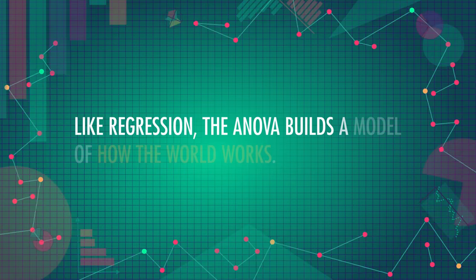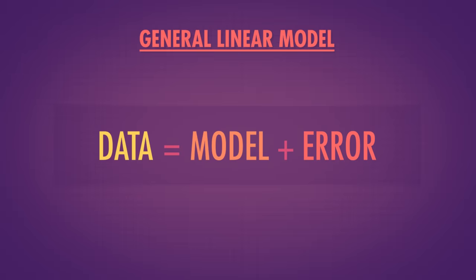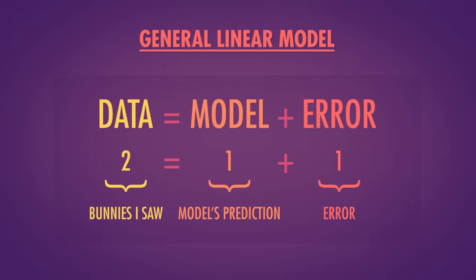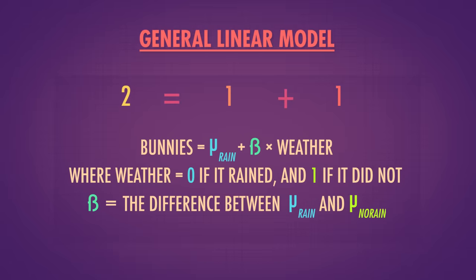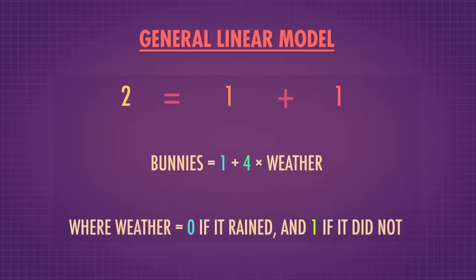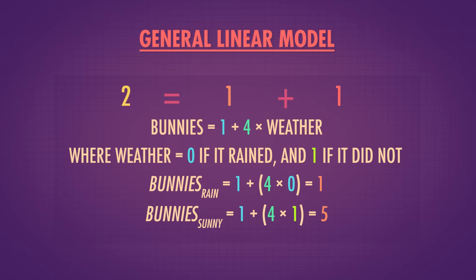Note that this alone isn't evidence that getting a degree causes a higher salary — just that knowing someone's degree might help estimate how much they get paid. Like regression, the ANOVA builds a model of how the world works. For example, my model of how many bunnies I'll see on my walk into work might be that if it's raining I'll see one bunny, and if it's sunny I'll see five — I walk through a bunny preserve. One and five are my predictions based on weather. Yesterday it rained and I saw two bunnies; my model predicted one, and my error is one. We can represent this as a regression where weather has only two possible values: zero if it rains, or one if it doesn't. The expected number of bunnies on a rainy day is one, and beta is the difference between the two means — five minus one is four.